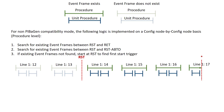If an existing Event Frame is not found between RST and RET, and there is also no Event Frame between RST and RST minus ABTO, the interface looks for the first start trigger after RST and then completes recovery up until the end time. In this case, line 1, 14 through line 1, 17 are recovered. Since no end time was specified, the interface finishes recovery and continues running in real-time mode.